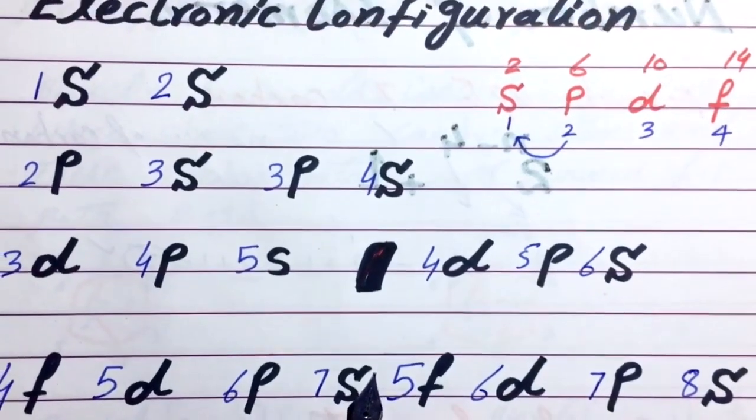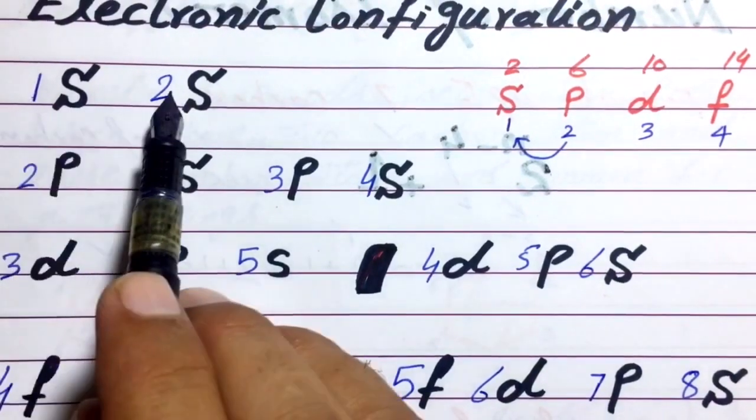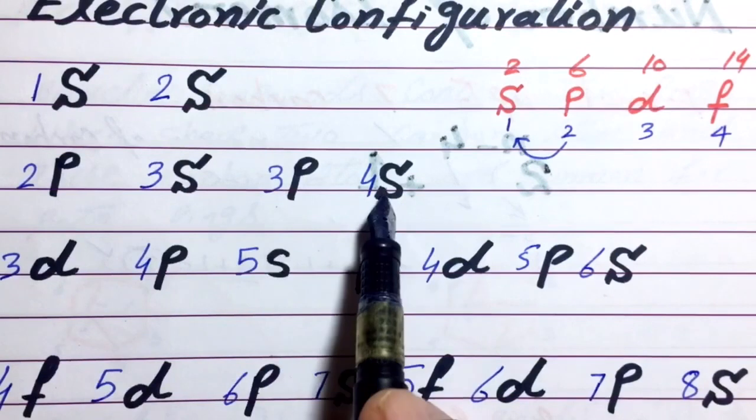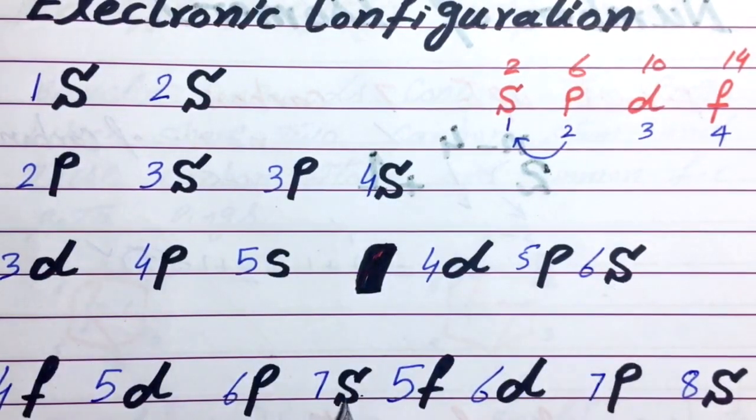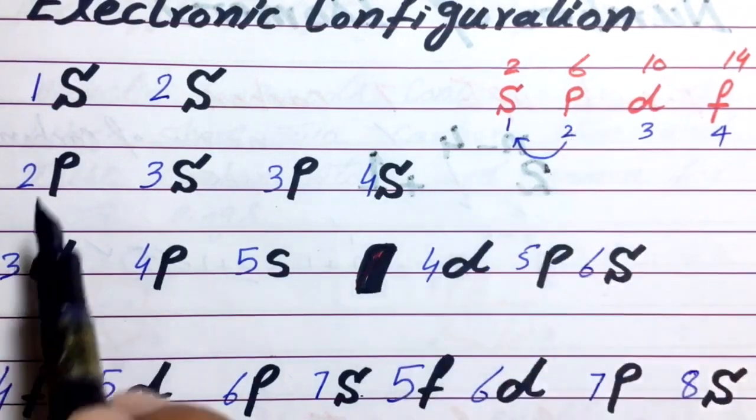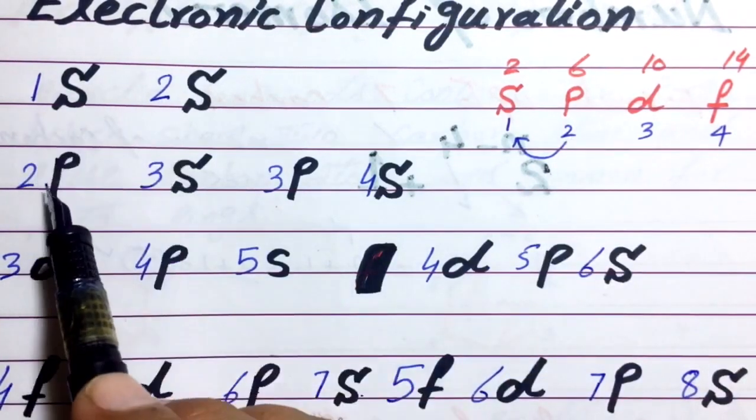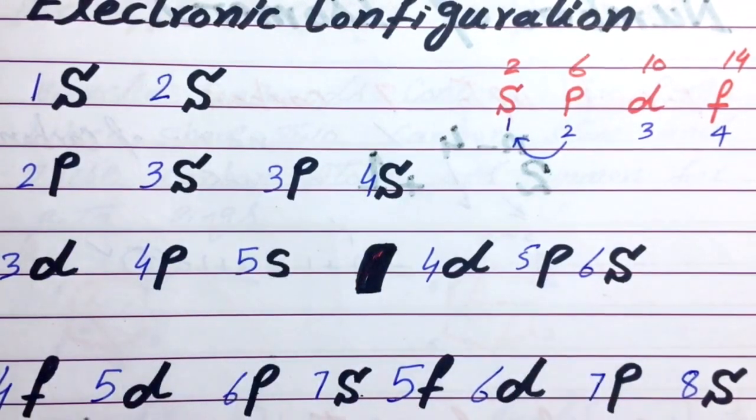Now we start the numbering of S from 1, 1, 2, 3, 4, 5, 6, 7 and 8. And the numbering of P will start from 2, 2, 3, 4, 5, 6 and 7.